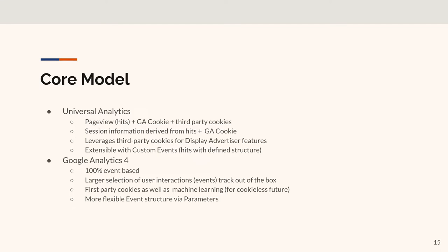GA4 is also moving towards cookie-less tracking - no longer using third-party cookies for anything associated with GA4, and Google says the model will support cookie-less tracking when that becomes a thing. How does Google get the data stew it wants? Machine learning and other secret sauce. Third-party cookies are gone, and GA4 will be positioned to handle cookie-less tracking when required. First-party cookies are Google Analytics; third-party cookies are anyone else.